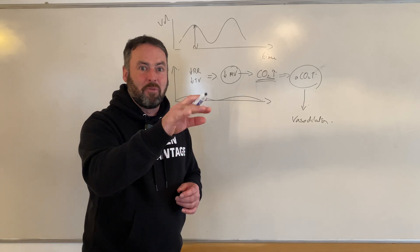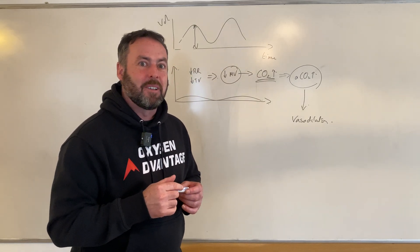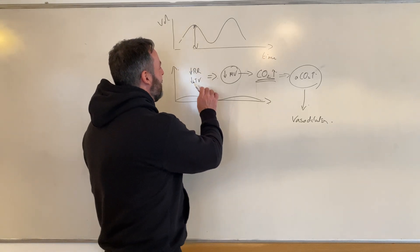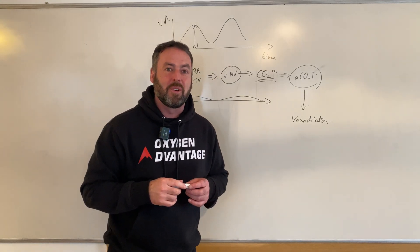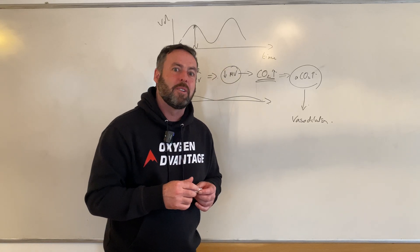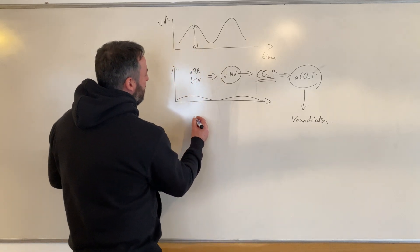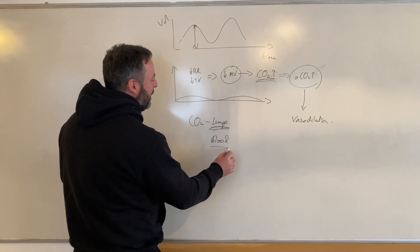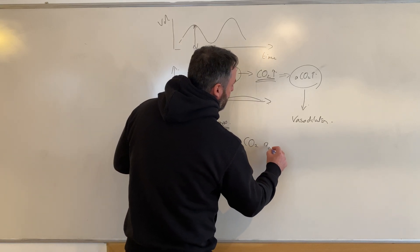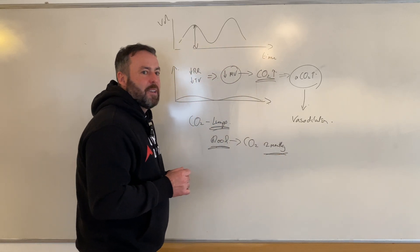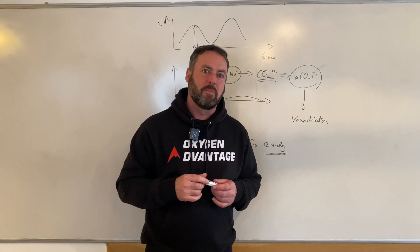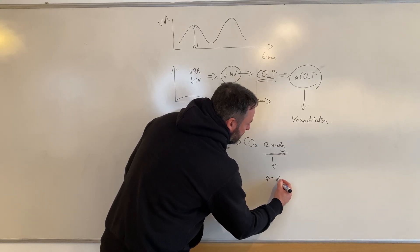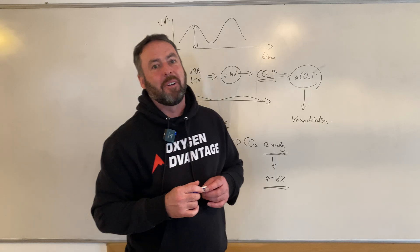Normal carbon dioxide is about 40 millimeters of mercury pressure. Every one millimeter increase of CO2 can improve blood flow to the brain by about two to three percent. If you breathe a little bit less air — as in the exercise called Breathe Light — you would expect to increase CO2 in your lungs and blood by about two to three millimeters of mercury. So by increasing carbon dioxide in the blood by two to three millimeters of mercury, you can improve blood flow to your brain by four to six percent, simply by breathing less air.